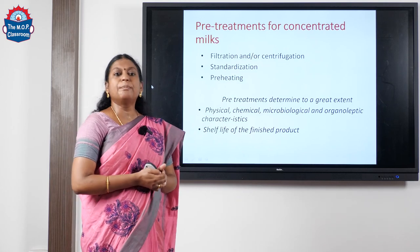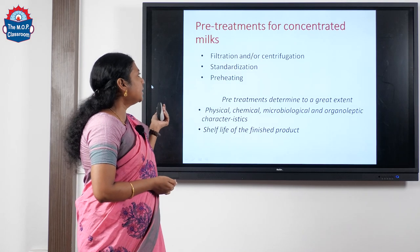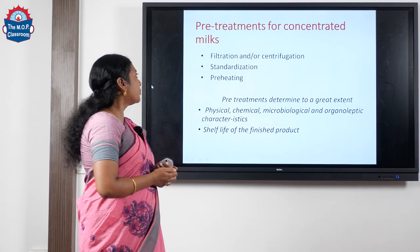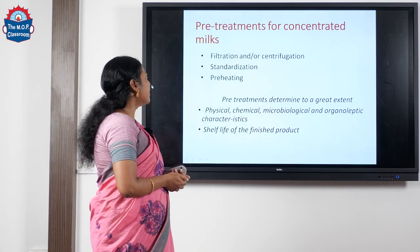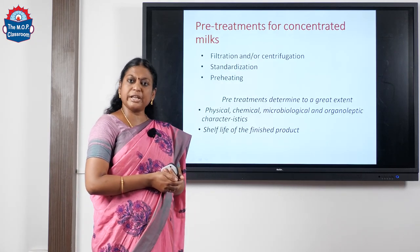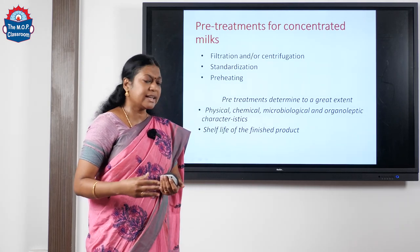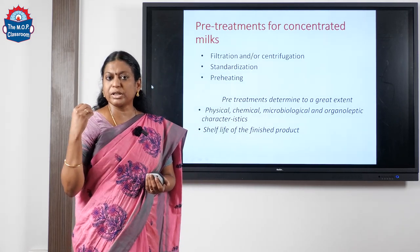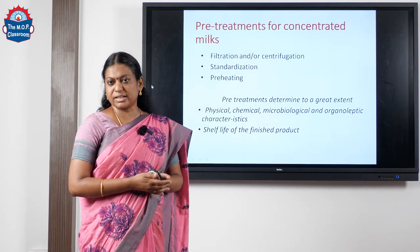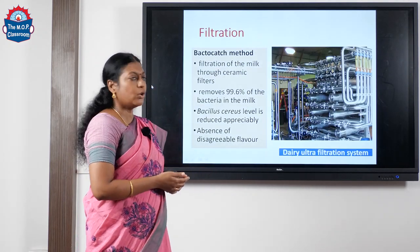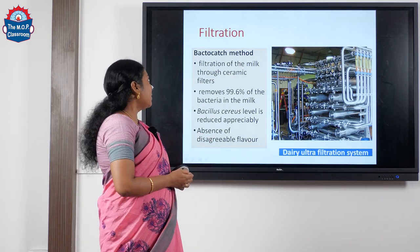Now we will move on to the pretreatments which are important in making sweetened condensed milk. The three important pretreatments are filtration or centrifugation, then standardization, and then preheating. All these pretreatments determine to a greater extent the physico-chemical properties of our final product, the organoleptic characteristics, and also the shelf life of the product.